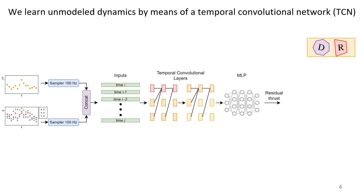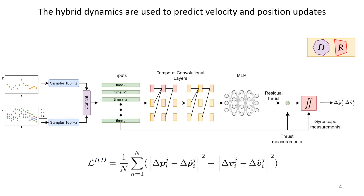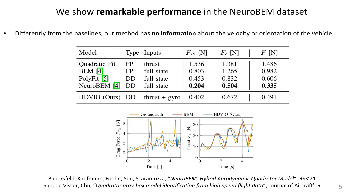These measurements are fed to a temporal convolutional network that predicts a residual thrust. The learned residual thrust is added to the measured thrust and, together with the gyroscope measurements, integrated to predict velocity and position updates.